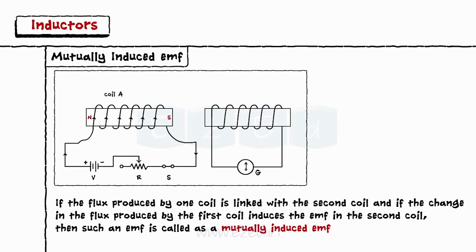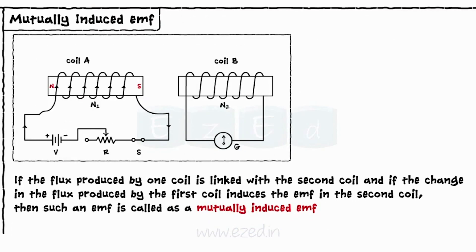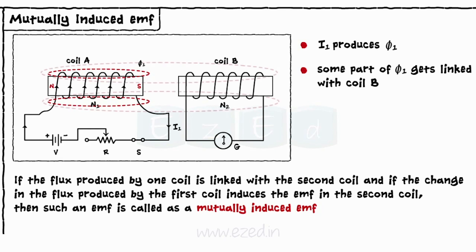Consider two coils A and B having N1 and N2 number of turns respectively. Current I1 flowing through the coil A produces the flux phi1. Some part of the flux gets linked with coil B which we call as mutual flux phi2.